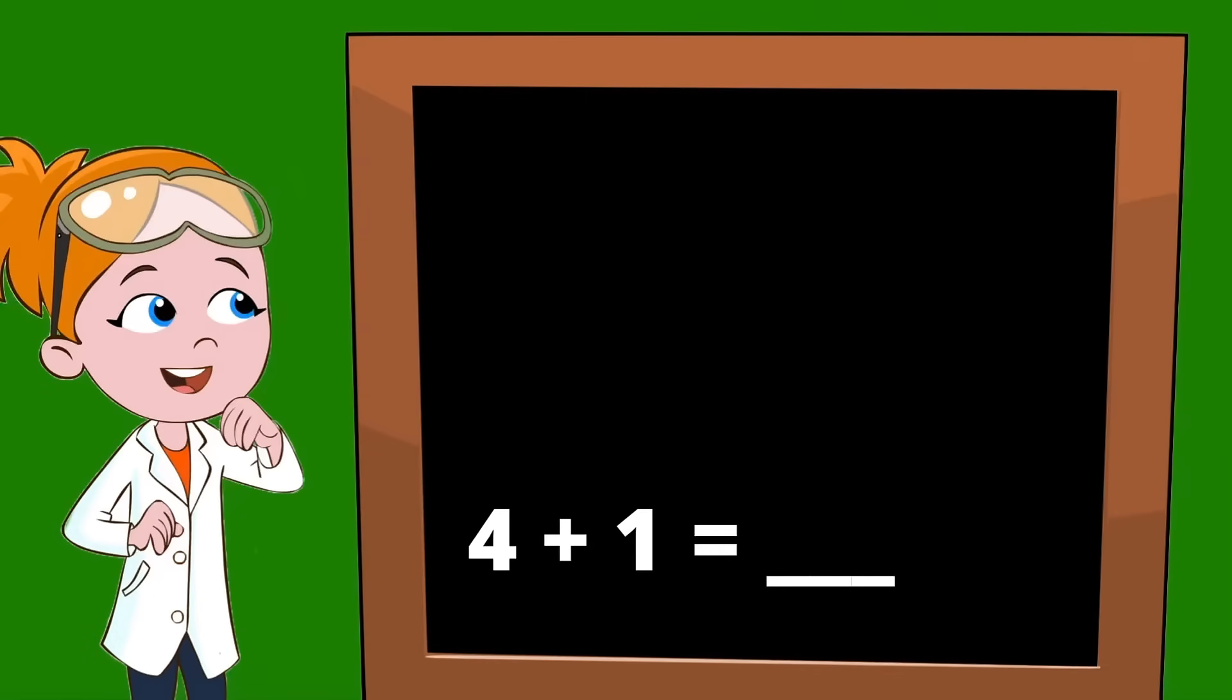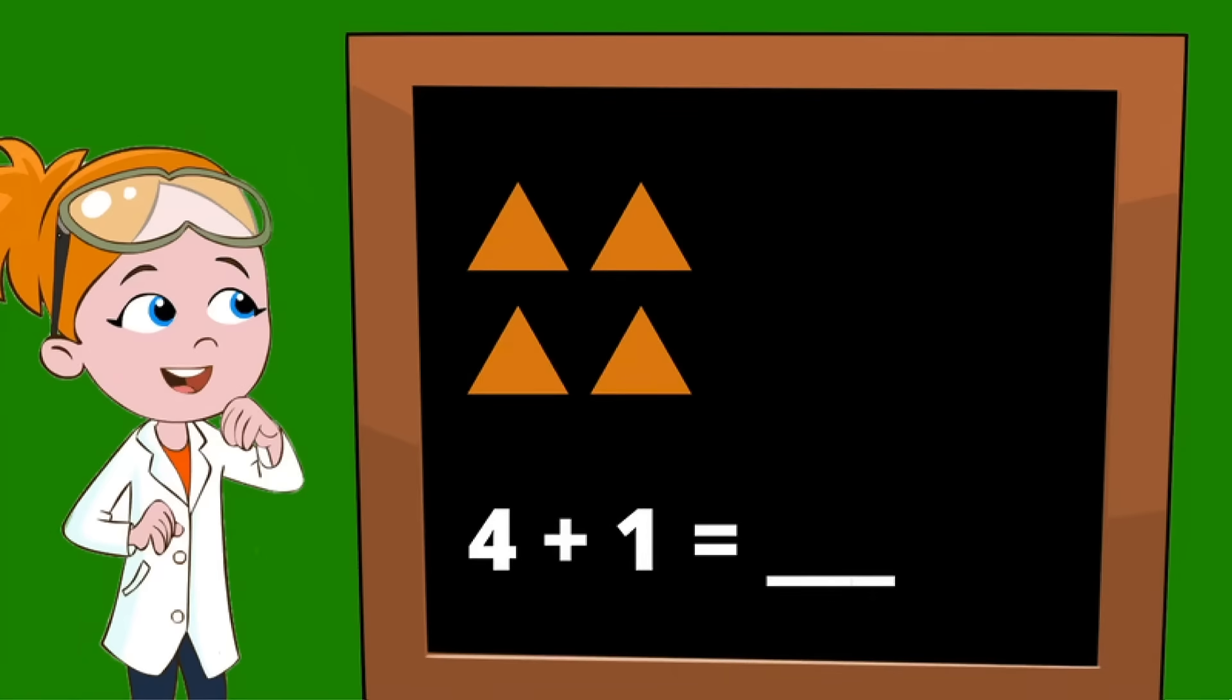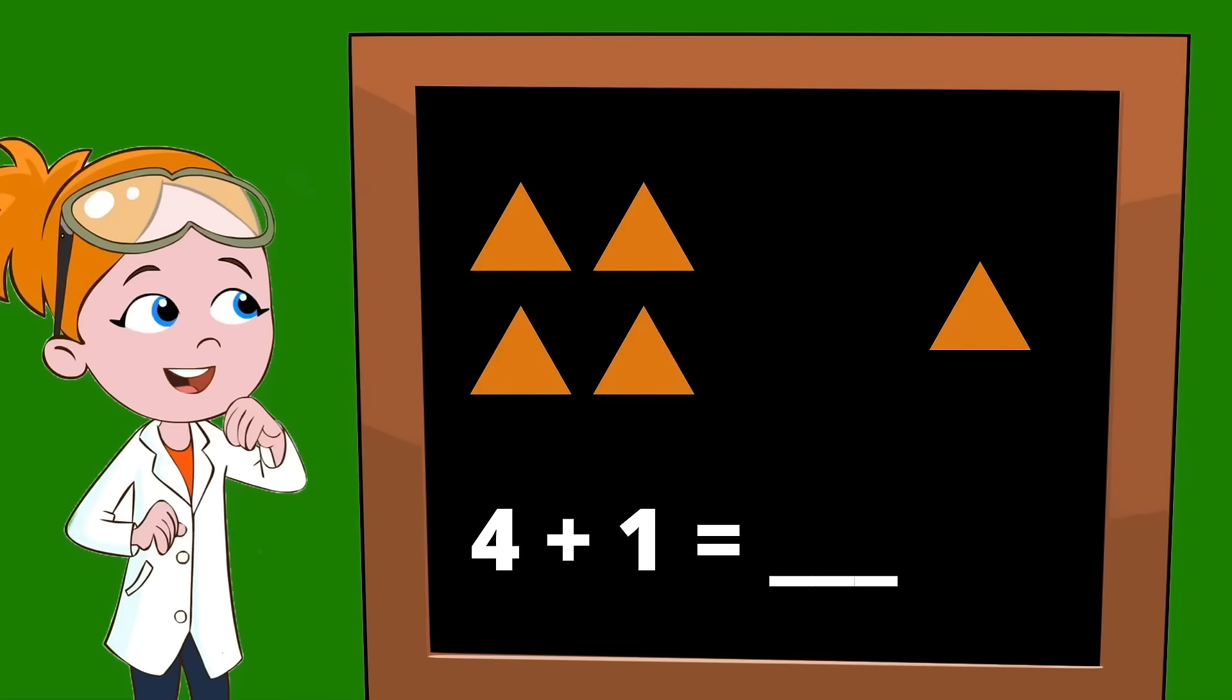There are four triangles. Hey look, there's four triangles. Then I gave you one more triangle and look at that, we have another triangle. How many triangles are there in all? To get the answer we simply count all the triangles. Let's count.